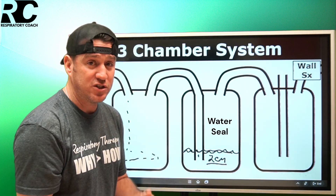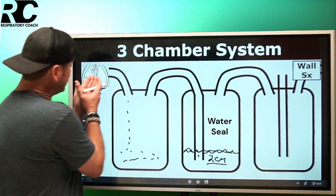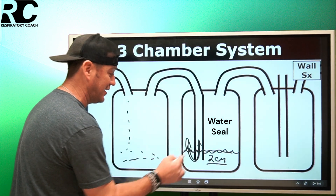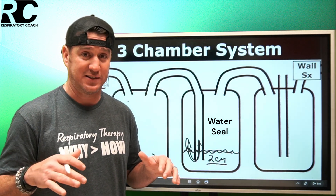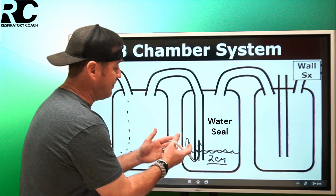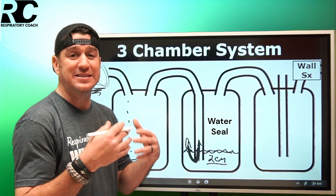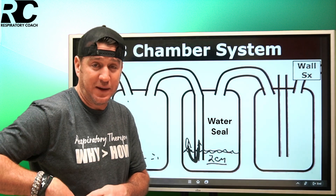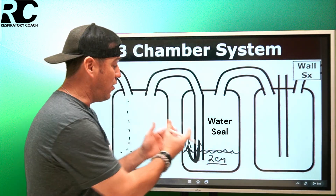Per Egan's page 552, the water seal is set at the two-centimeter mark, meaning the tube is submerged about two centimeters. As the patient breathes, the diaphragm contracts, pressure becomes negative, and you may see the water draw up slightly; on exhalation it pushes back down. On positive pressure ventilation, pressure increases intrathoracically on inspiration, pushing the water down, then returning on exhalation. This tilting fluid movement is representative of intrathoracic pressure changes.